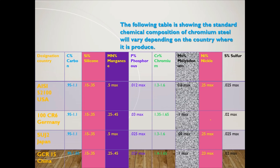The following table shows the standard chemical composition of chromium steel, which will vary depending on the country where it is produced. For the USA: Carbon 0.95–1.1%, Silicon 0.15–0.35%, Manganese 0.5% max, Phosphorus 0.012% max, Chromium 1.3–1.6%, Vanadium 0.08% max, Nickel 0.25% max, Sulfur 0.025% max.